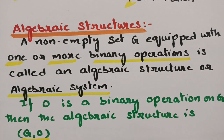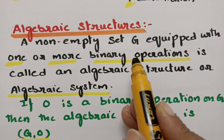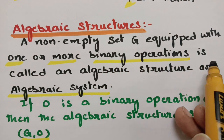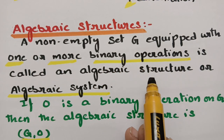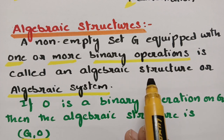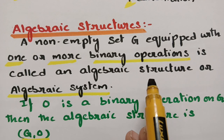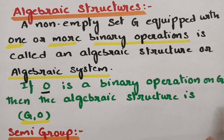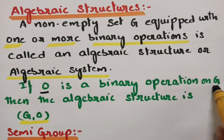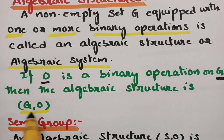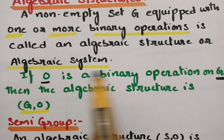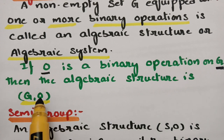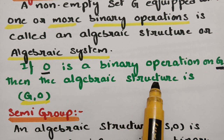An algebraic structure is so simple: a non-empty set G equipped with one or more binary operations is called an algebraic structure or an algebraic system. If circle is a binary operator — a binary operation on the non-empty set G — then the algebraic structure is denoted as (G, circle).